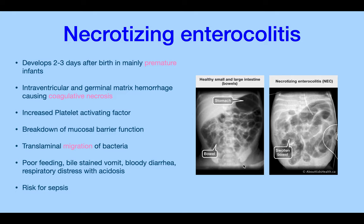Necrotizing enterocolitis occurs about two to three days after birth, mainly affecting premature infants. Intraventricular and germinal matrix hemorrhage causes coagulative necrosis. Increased platelet-activating factors are found in serum, and breakdown of the mucosal barrier allows transluminal migration of bacteria, worsening necrosis as the immune system damages the germinal matrix. It presents as poor feeding, bile-stained vomit, bloody diarrhea, and in later cases respiratory distress with acidosis and risk of sepsis.